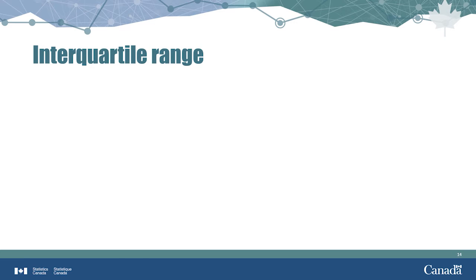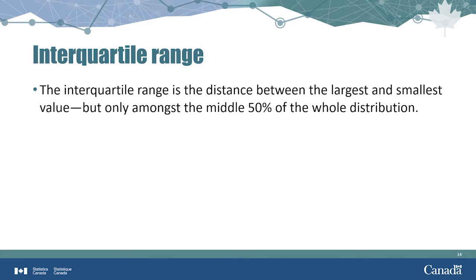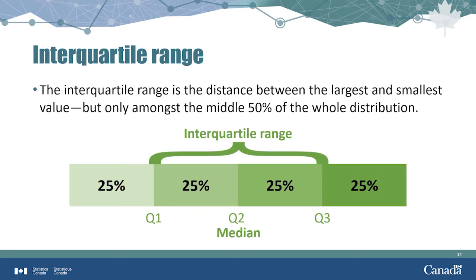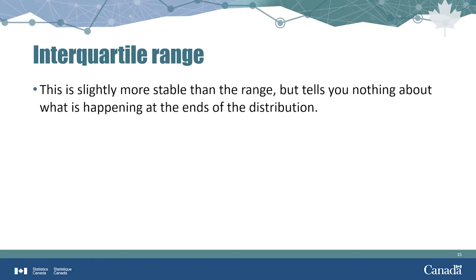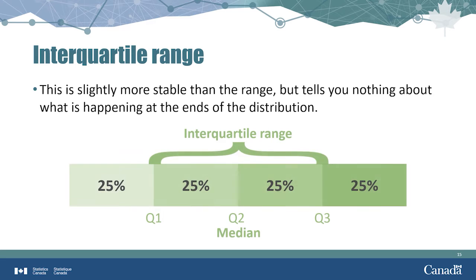Similar to the range is the interquartile range. The interquartile range is also the distance between the largest and the smallest value, but only amongst the middle 50% of the whole distribution. This makes it slightly more stable than the full range, because it does not consider the bottom and top 25% of the data, helping insulate against the impact of most outliers. However, when using the interquartile range, you will lose detail about what is happening at the ends of your distribution.